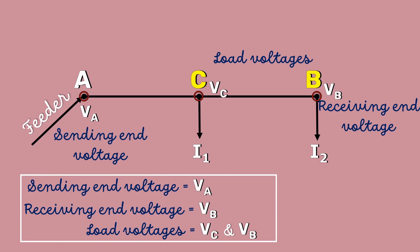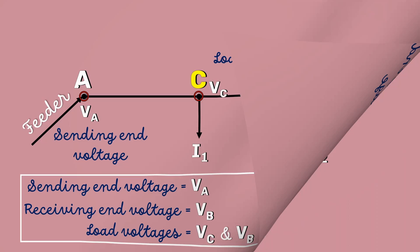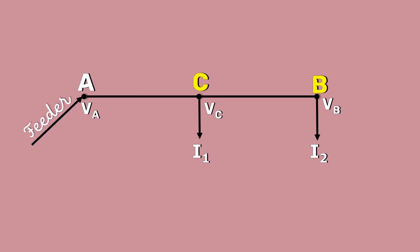Since this is the AC system, there will be voltage drops due to the combined effects of resistance, inductance and capacitance. Let R1, X1 and R2, X2 be the resistance and reactance of AC and CB sectors.